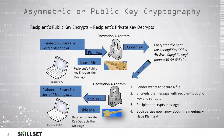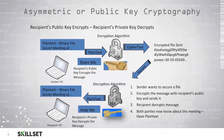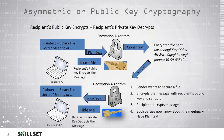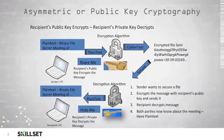Here we have a visual depiction of how asymmetric or public key cryptography functions. In this example, the sender would like to send a message about a secret meeting. The sender uses the recipient's public key, which is widely available and can be shared with anyone — either sent in an email message or posted on a website. The sender takes that recipient's public key and encrypts the message content, creating ciphertext which can be safely transmitted without worry of someone intercepting and reading it.